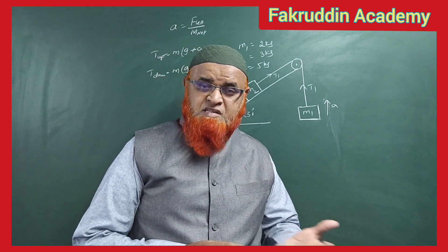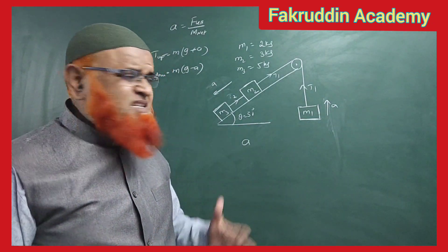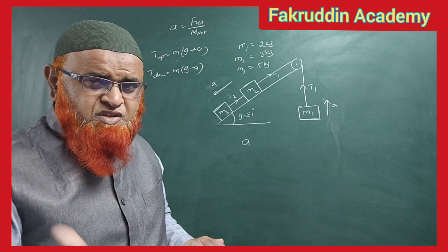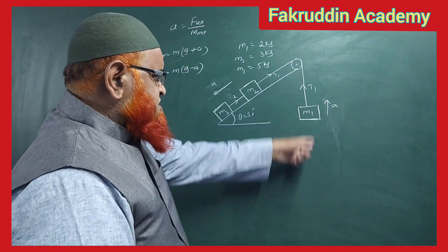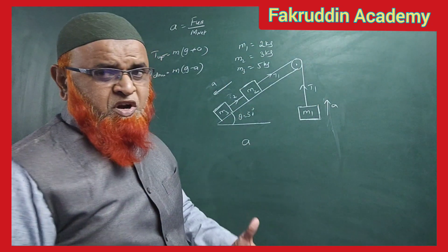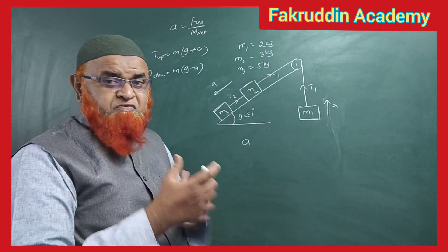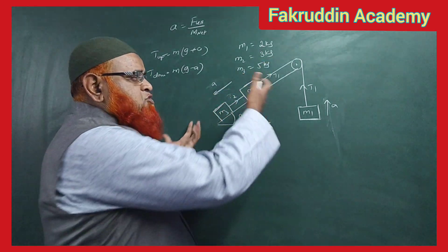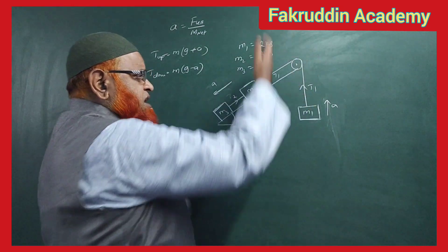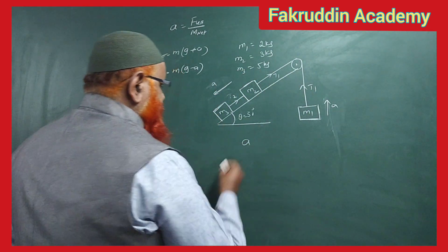One more problem: one block is hanging down and two blocks are resting on an inclined plane. The hanging block moves upward because the two inclined blocks (3 kg and 5 kg) are dominating over the 2 kg hanging mass, so the inclined blocks move downward and the hanging block moves upward. How do we find acceleration?